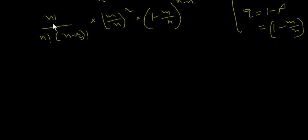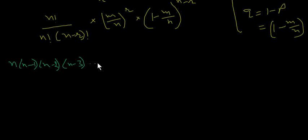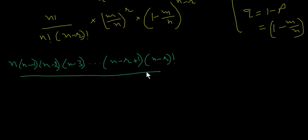If we open n factorial, it will be n minus r factorial times the product: n, n minus 1, n minus 2, n minus 3, and so on up to n minus r plus 1. And then again it will have n minus r factorial. Below is also r factorial times n minus r factorial.